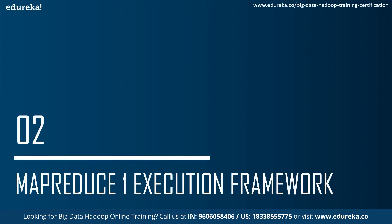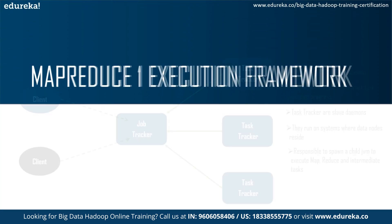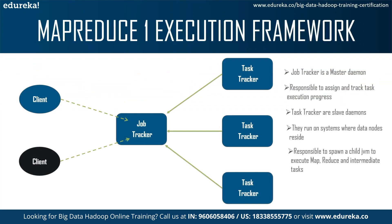In the MapReduce 1 execution framework we have a master daemon called the JobTracker which is responsible for assigning and tracking task execution progress. Then we have the slave daemon called the TaskTracker which runs on systems where data nodes reside. They are responsible for spawning child JVMs to execute MapReduce and other intermediate tasks. In MapReduce 1, the JobTracker takes care of both job scheduling and task progress monitoring.